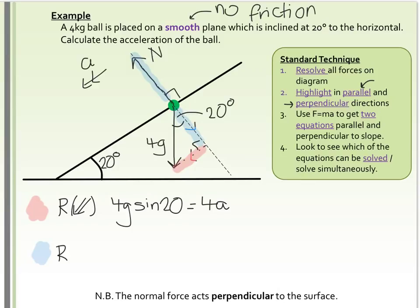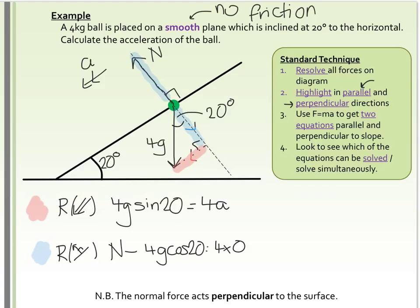Now for the perpendicular components — I'll draw an arrow going up with a small right angle to show the perpendicular direction. So I've got the normal minus 4g cos 20, and that equals mass times acceleration. However, as the ball isn't going through or away from the surface, acceleration in the perpendicular direction is 0. Looking at both equations, the red one gives us the acceleration: we cancel the 4s, so a equals g sin 20. Plugging that into the calculator gives a = 3.35 metres per second squared.